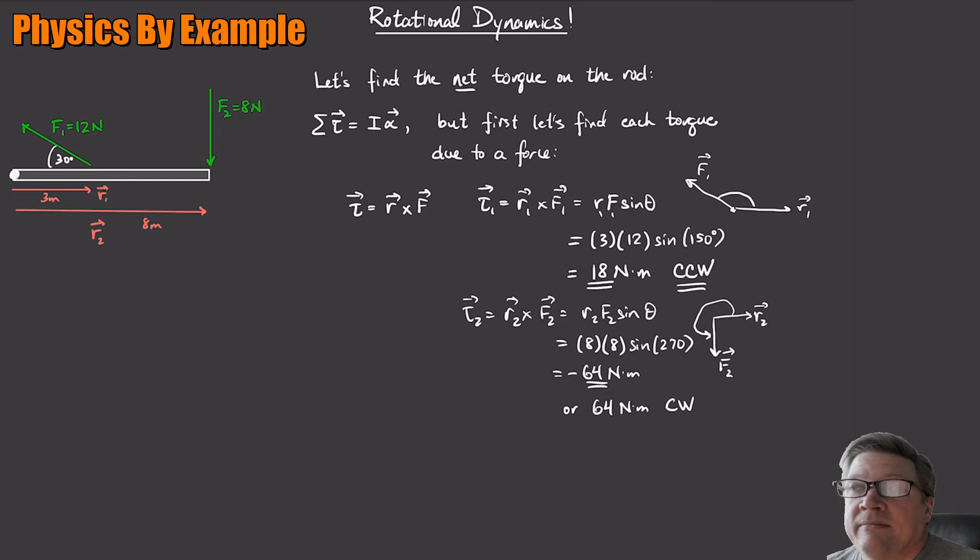So what's the net torque? I'm just going to add the two together, just like adding force vectors. So the net torque is just going to be 18 minus 64. What's that? Like minus 48 newton meters. Or 48 newton meters clockwise. So the net effect of these things, the net effect of these torques is that if both of them are applied, this thing is going to want to spin clockwise.